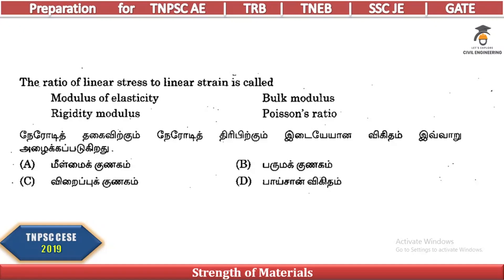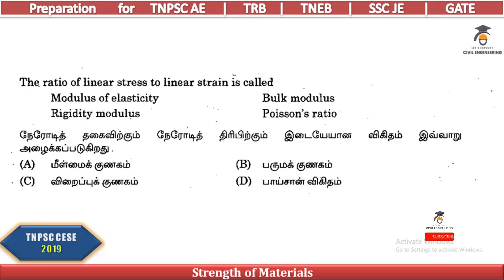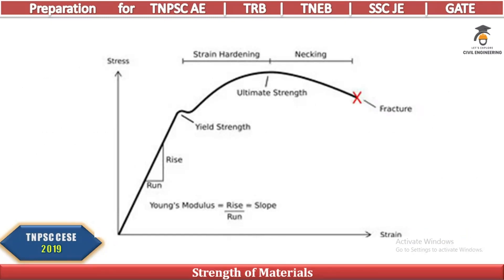First question: the ratio of linear stress to linear strain is called what? Linear stress to linear strain is stress divided by strain. Linear means normal stress. The answer is modulus of elasticity, that is Young's modulus. Young's modulus and modulus of elasticity are two names for the same concept.